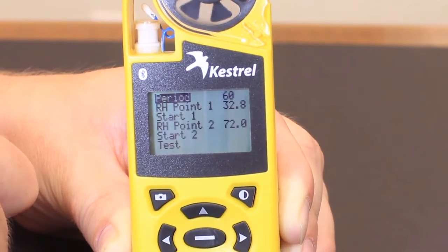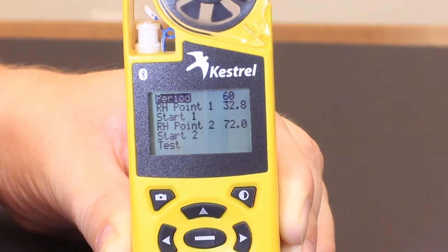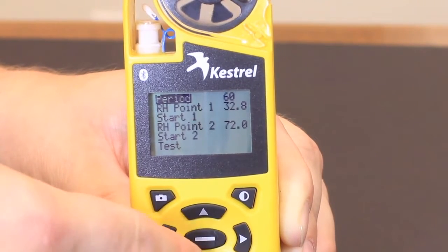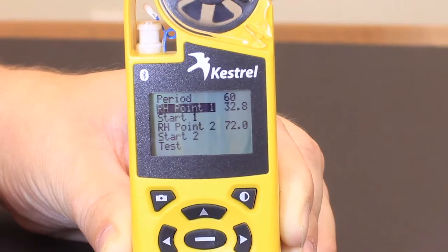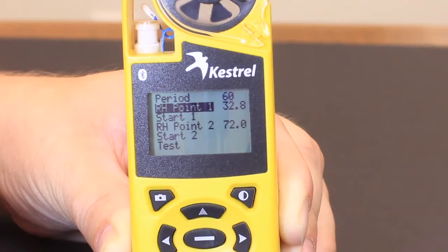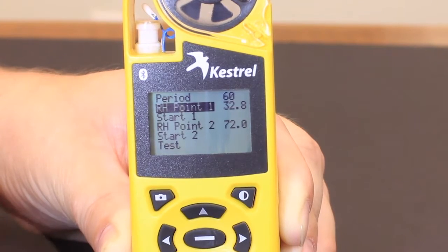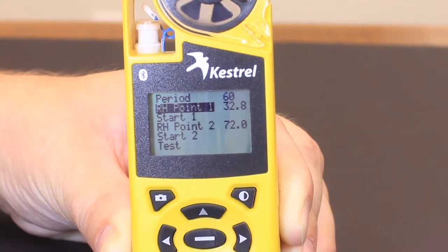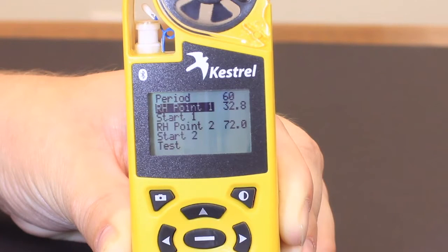You'll go down to the RH.1 and you want to make sure that this reads the same as the first chamber, which is 32.8 percent. Use the left and right if it doesn't to adjust this to 32.8.